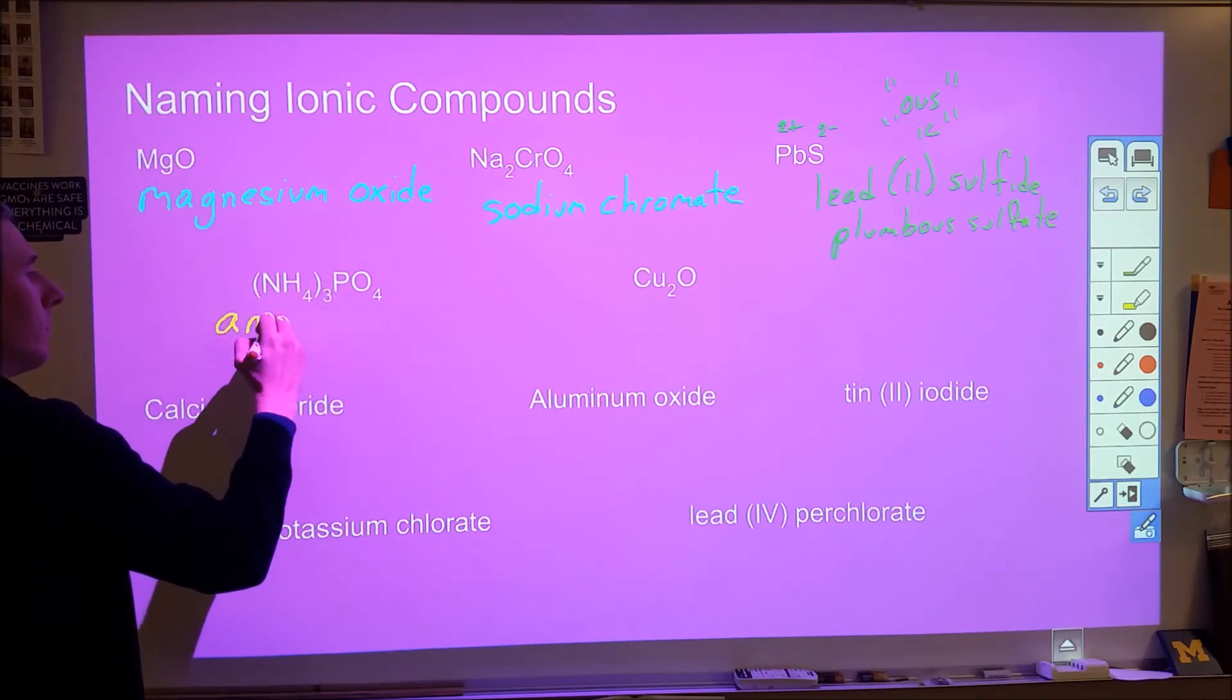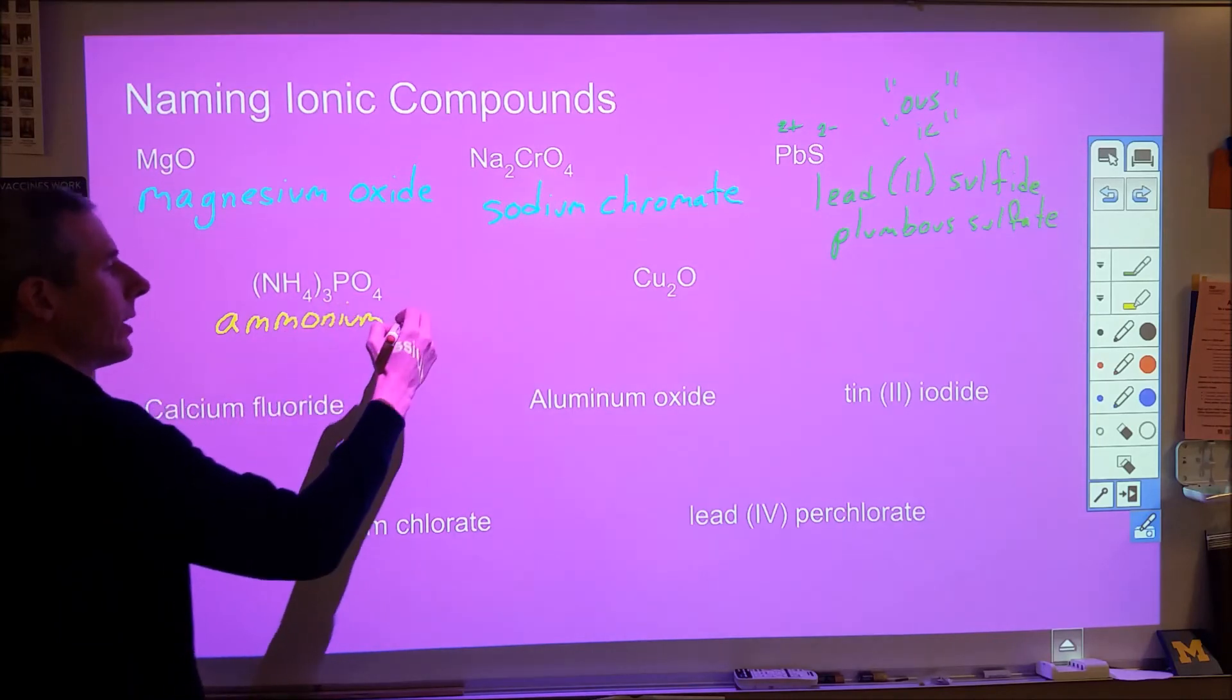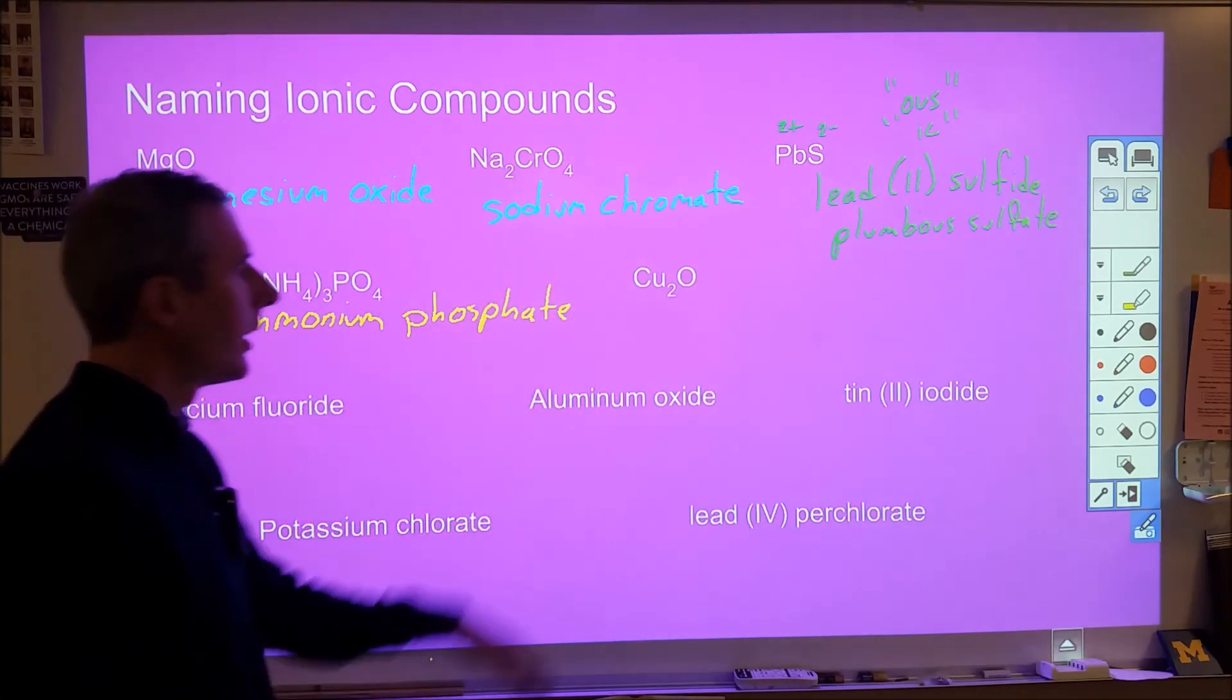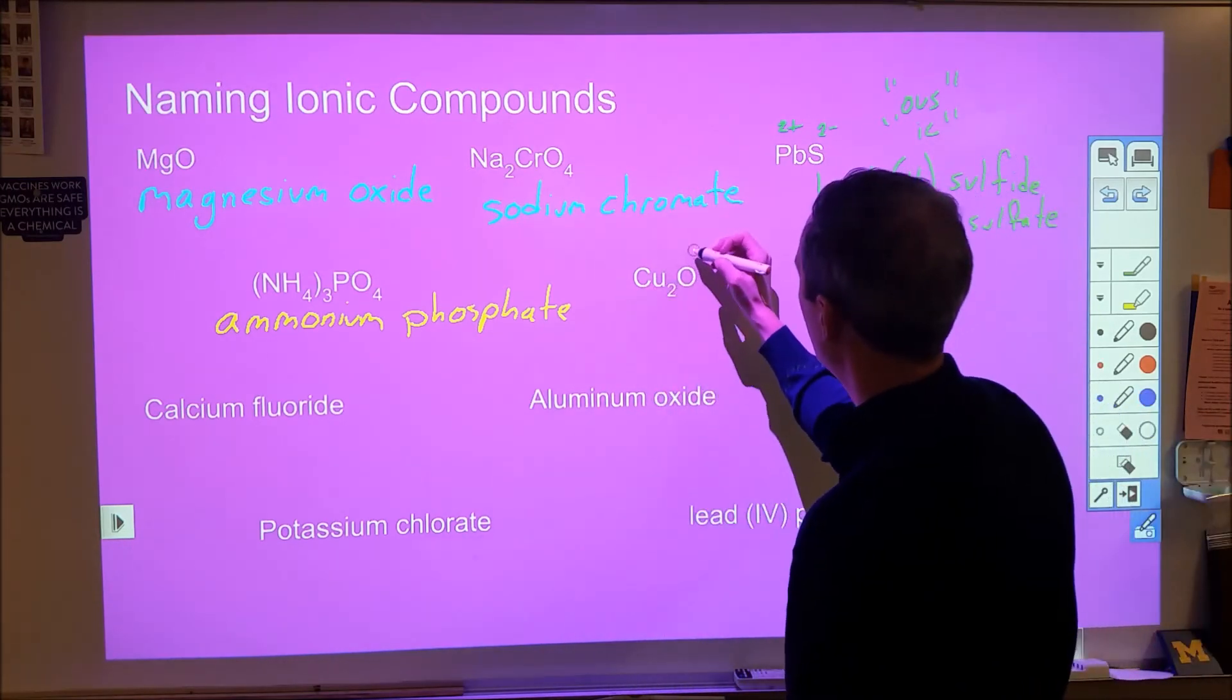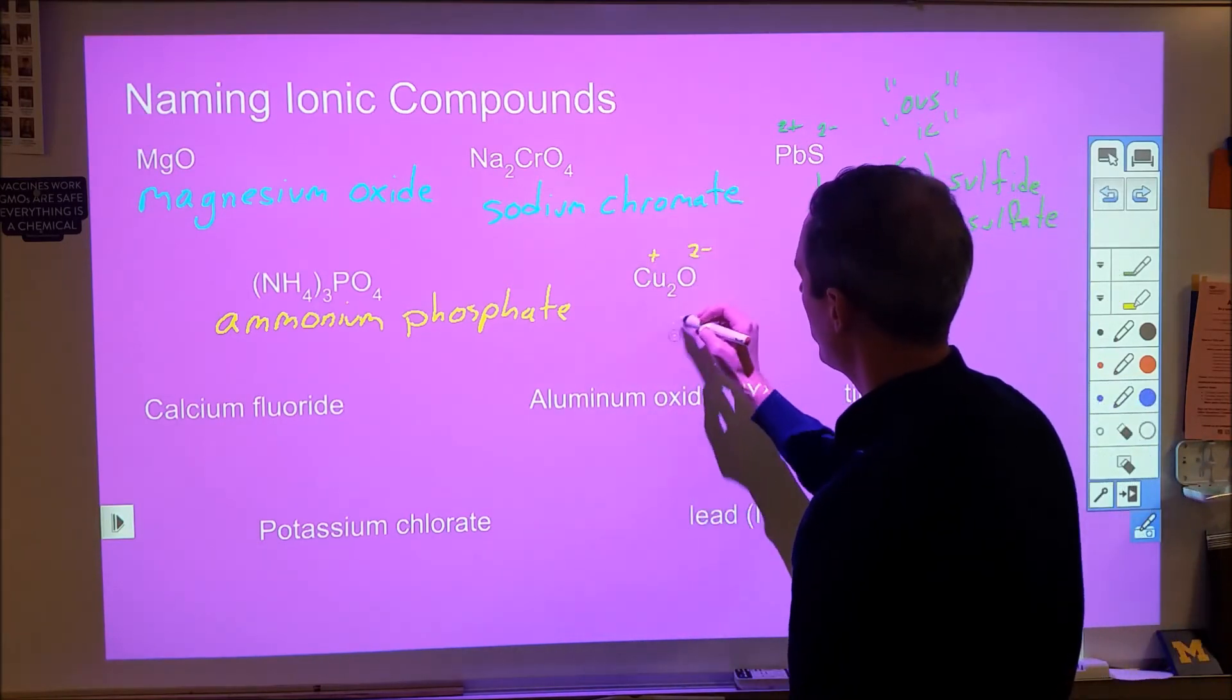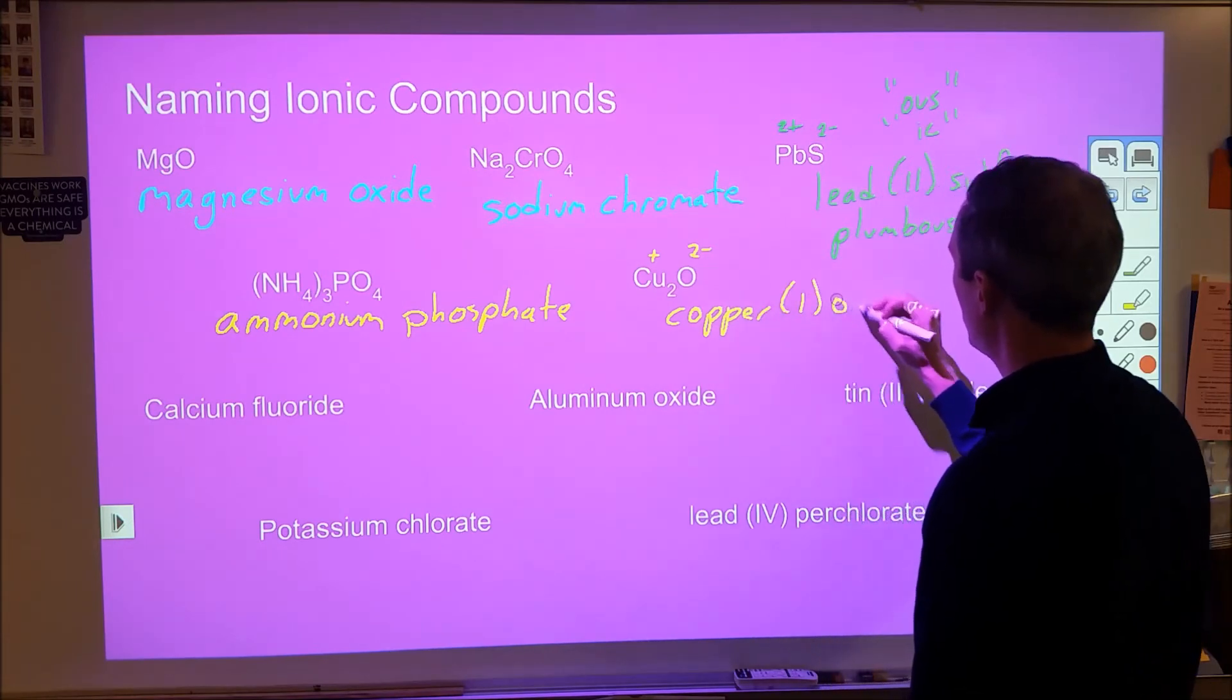Now this is ammonium and then PO4 is phosphate. So that would be ammonium phosphate and then here we have copper. Copper can have different charges so we have copper we've got to figure out the charge. We have a 2- charged oxide so each copper here must be +1 charged so this would be copper roman numeral one oxide.